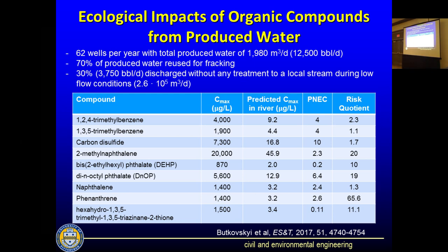The reason I bring this up is that we shouldn't be focusing on trying to identify everything exactly in that stream — we could spend the next 20 years doing that as analytical equipment gets better and we can detect trace levels. We should take this risk-based approach to see what happens if produced water ends up in various scenarios and how much impact it makes, before deciding which specific compounds to investigate.